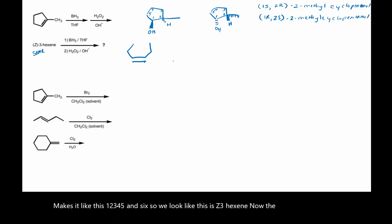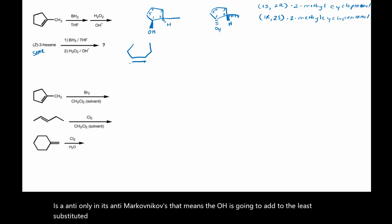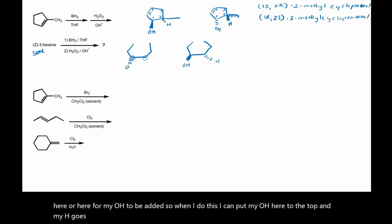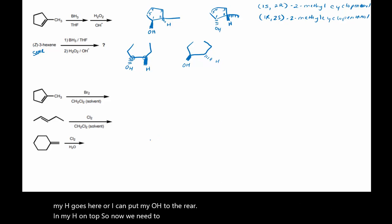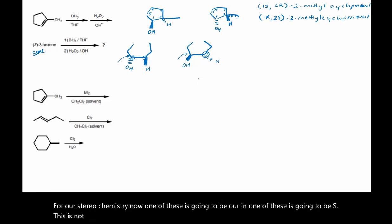The hydroboration oxidation is anti-only and it's anti-Markovnikov. That means the OH is going to add to the least substituted carbon. In this case they're both going to be secondary carbons, so I'm looking here or here for my OH to be added. When I do this, I can put my OH to the top and my H goes here, or I can put my OH to the rear and my H on top. Now one of these is going to be R and one of these is going to be S.